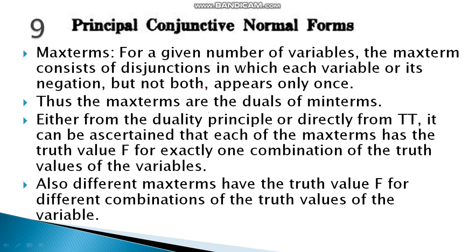Previously, in my last lecture, we discussed about sum of terms, and those terms are called min terms. A min term is a product of variables. These min terms are disjuncted together to form a Principal Disjunctive Normal Form. In this lecture, we are going to deal with a new concept called the max term.